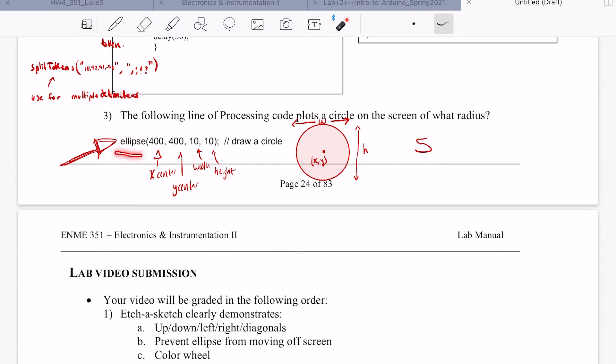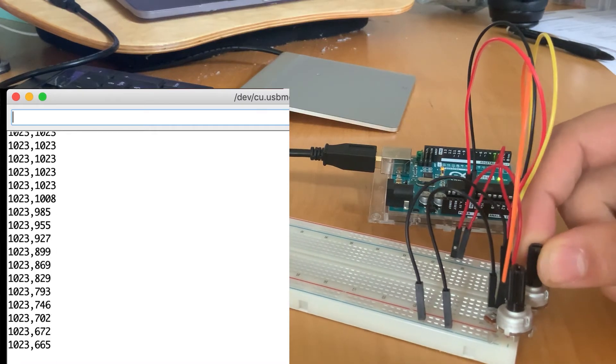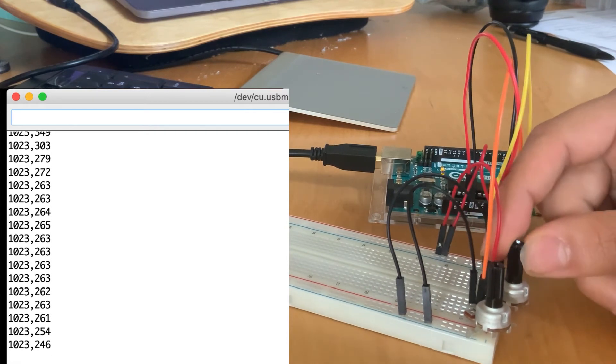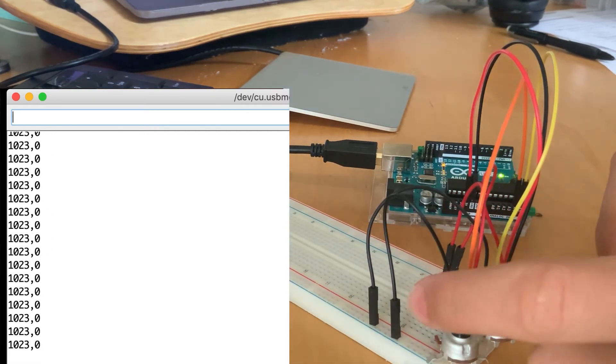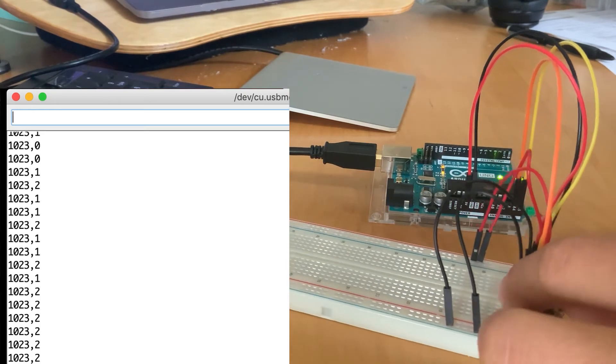Part three, so the ellipse function works like this and the radius will be half of the width or half of the height because we're talking about a circle will be the same and that will be five. The ADC on the Arduino is a 10-bit ADC, so it has the ability to detect 2 to the 10 discrete analog levels and 2 to the 10 is 1024.